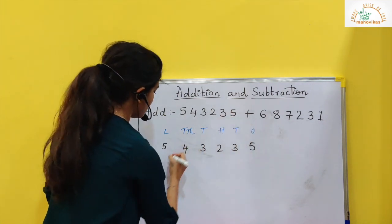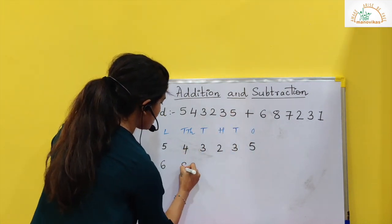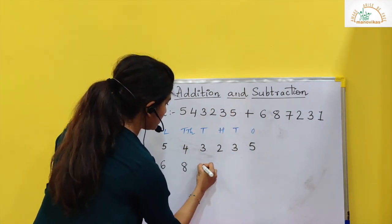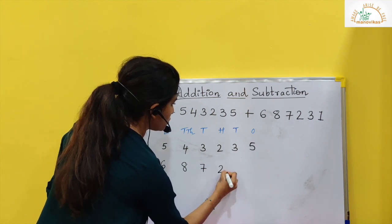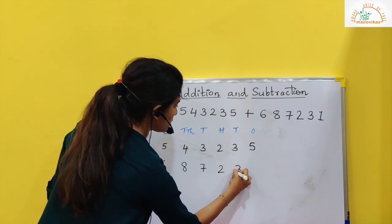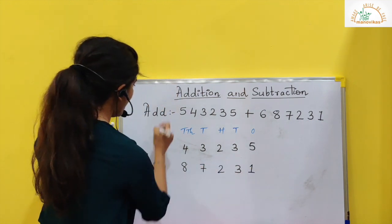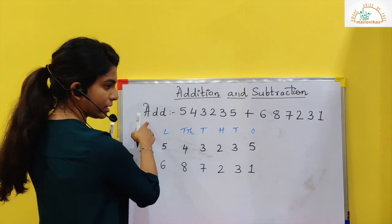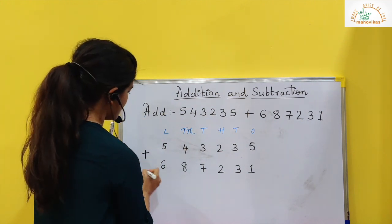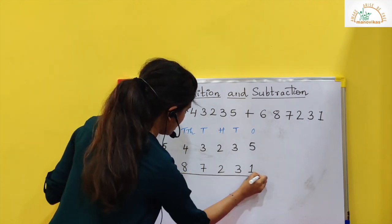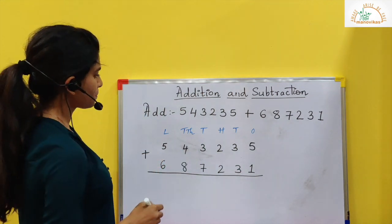Let's take the next number. It is 6, 8, 7, 2, 3, 1. And since it is addition I will put a plus sign and then add.